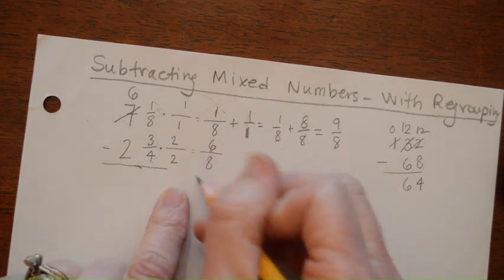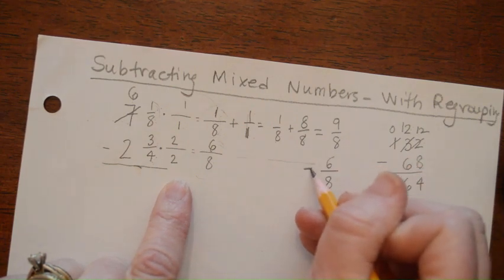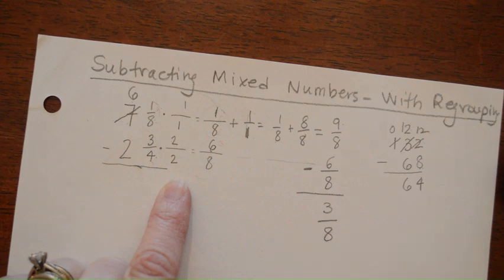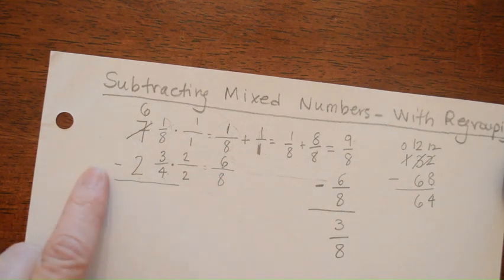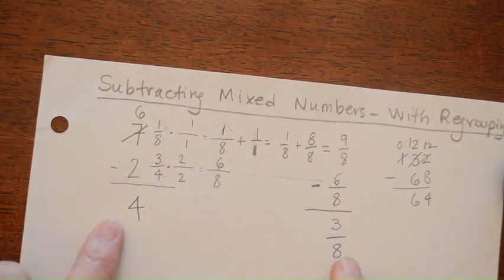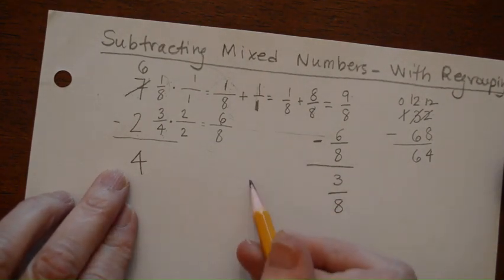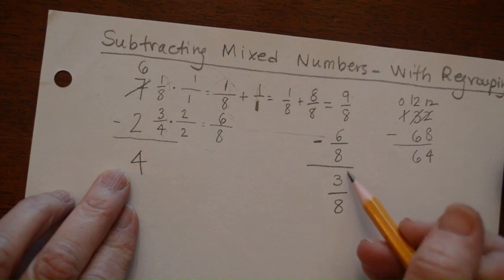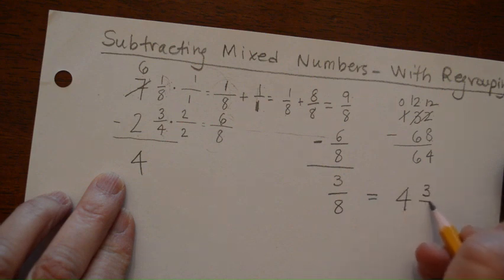This 6 eighths has just been sitting here patiently, so I'll bring it all the way over — it's 6 eighths. Remembering that we're subtracting, I do 9 eighths minus 6 eighths and get 3 eighths. Then 6 minus 2 is 4. So the answer is 4 and 3 eighths. Looking at 3 eighths — can I simplify? No, 3 is prime and not a factor of 8, so our final answer is 4 and 3 eighths.